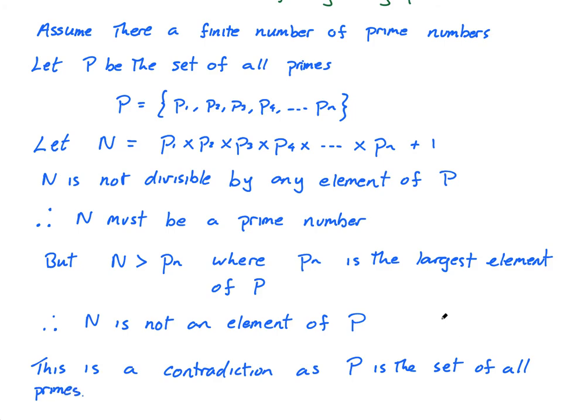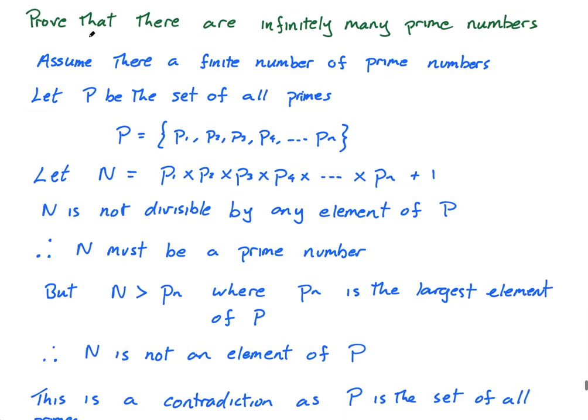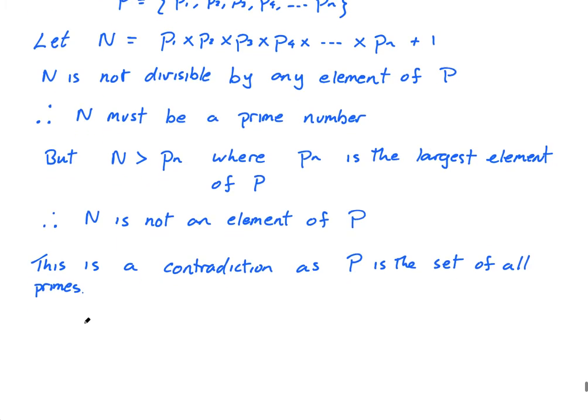And there we go. So, and finish it off by saying, what are we trying to prove? There are infinitely many prime numbers. Therefore, there are an infinite number, there are an infinite number of prime numbers. Done.